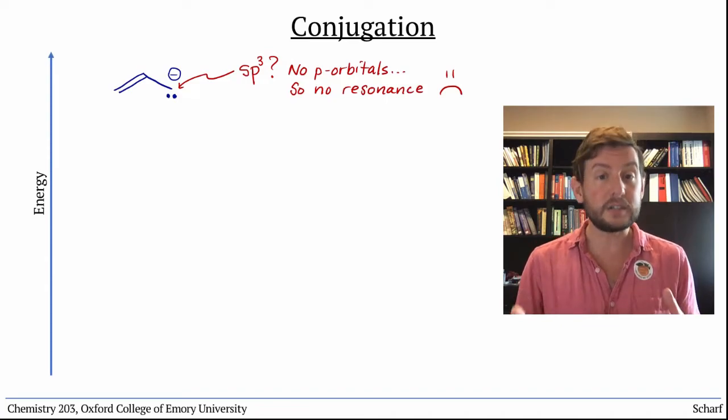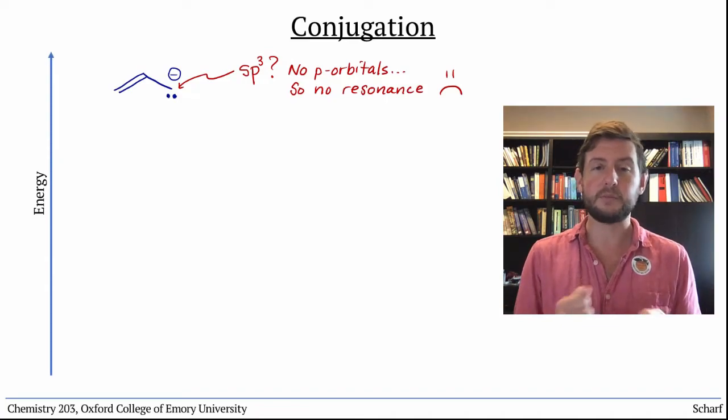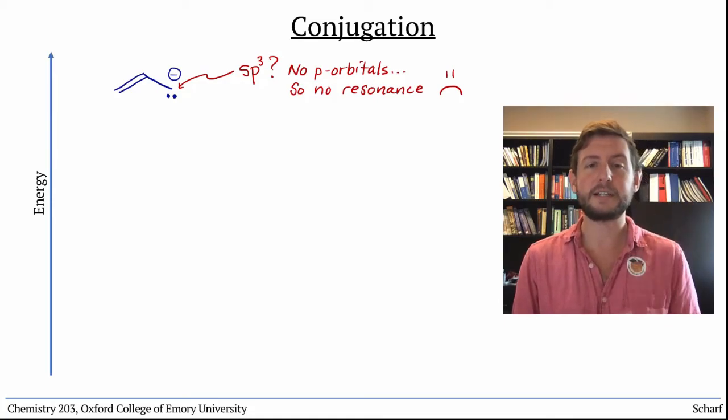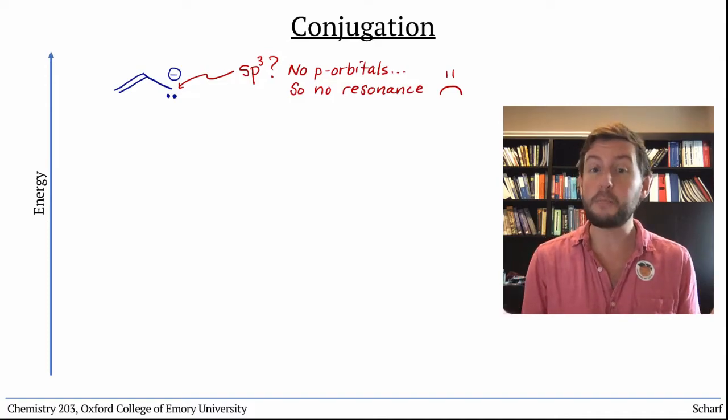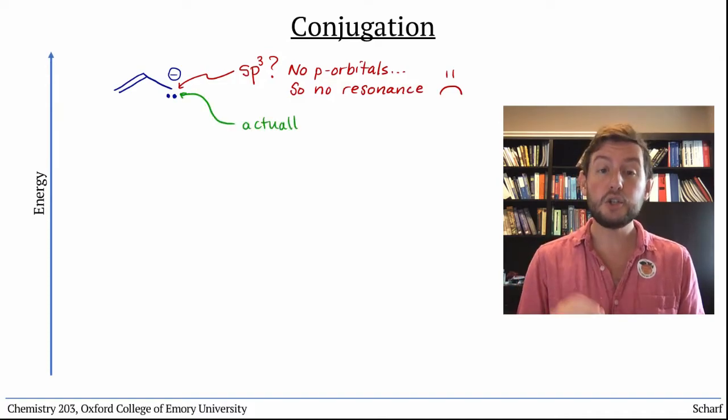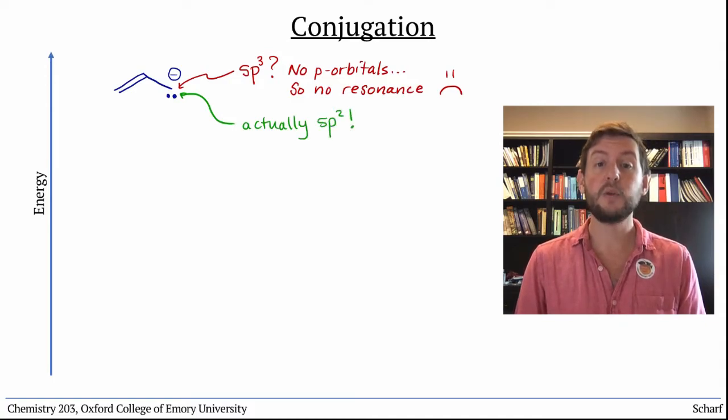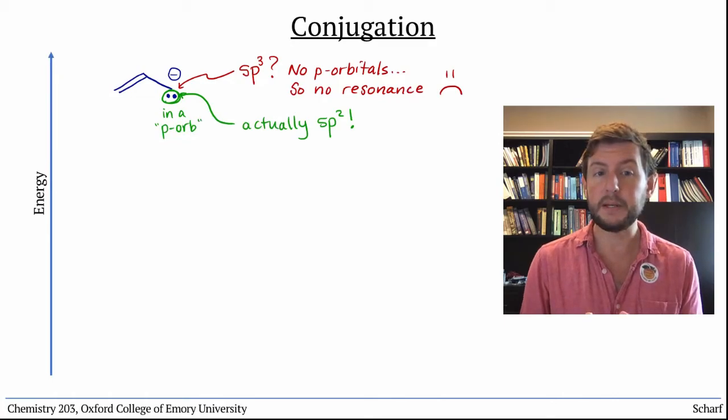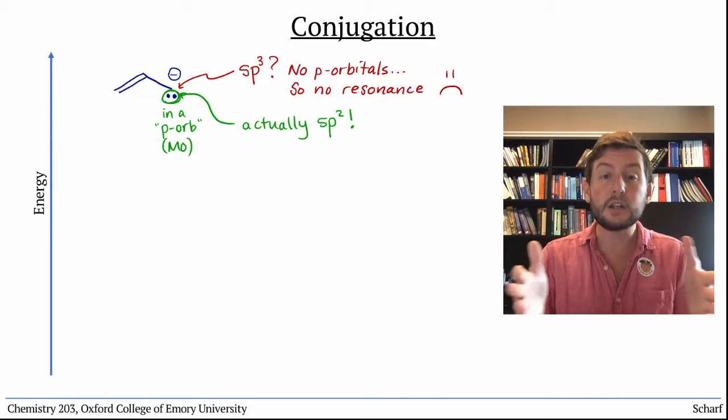So because it would like to be more stable, this carbon atom says, 'Hey lone pair, please be in a p orbital so you can spread out with that pi bond next door.' The lone pair obeys, and that carbon atom is actually sp2 hybridized with what appears to be a lone pair in a p orbital. But it's not really in a solitary p orbital. It's in a molecular orbital.